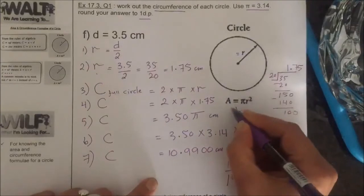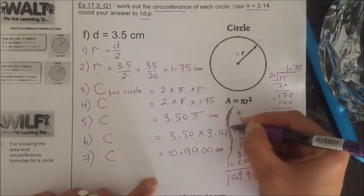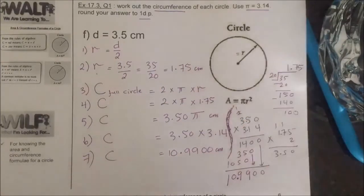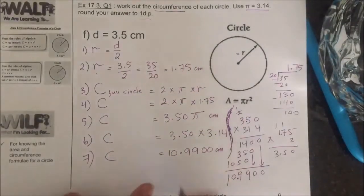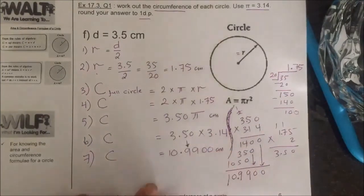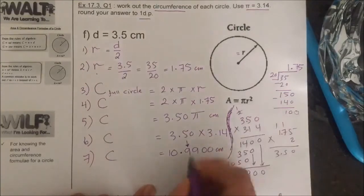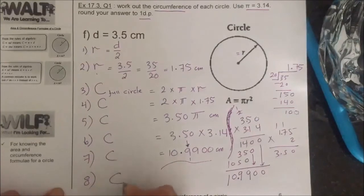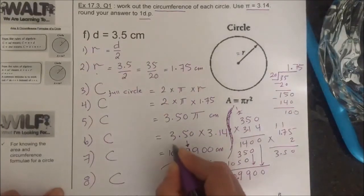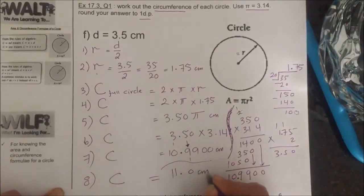I repeat, it's centimeter. They ask us to round it to one decimal place. So this is my decimal, this is my tenths, the first decimal place. And there is a 9 to the right, so it's going to get my 9 up. So the final answer will be 11.0 centimeter.